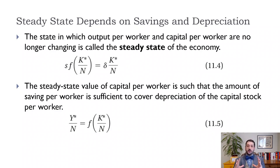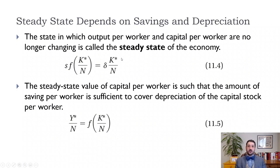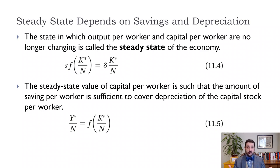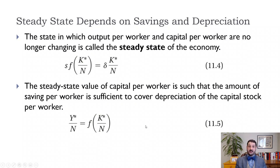The steady state is where the capital stock isn't changing, so Kt+1 over N equals Kt over N, meaning the left-hand side of our equation is zero, and investment equals depreciation: s times f(K*/N) equals delta times K*/N. Once we know our steady-state value of capital per worker, we plug it into our production function to get our steady-state value of output per worker. Note that once you're at the steady state, output per worker doesn't change — you need something else to change, like the depreciation rate or the savings rate. What we'll introduce in chapter 12 is technology changing, which will lead to long-run growth.